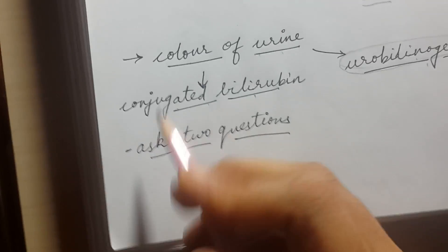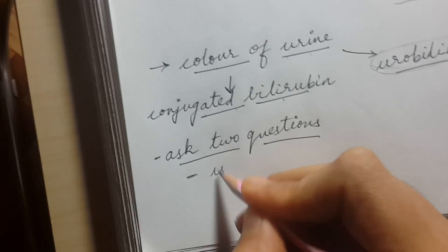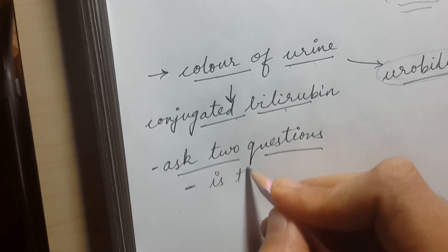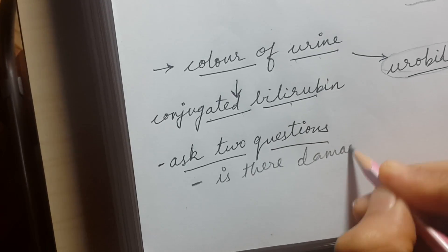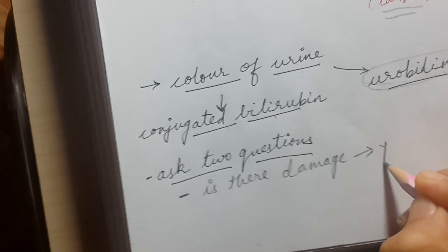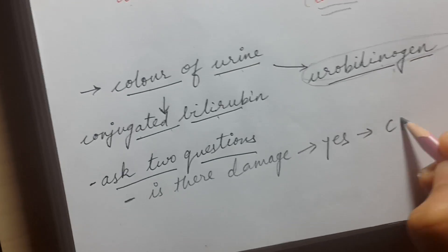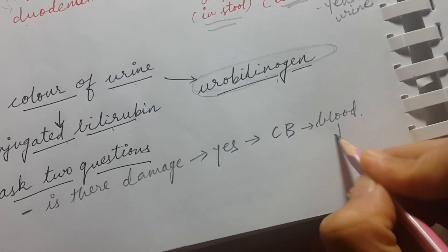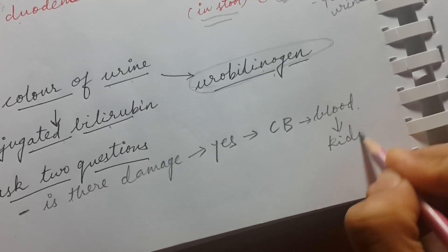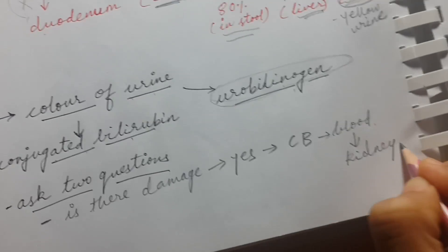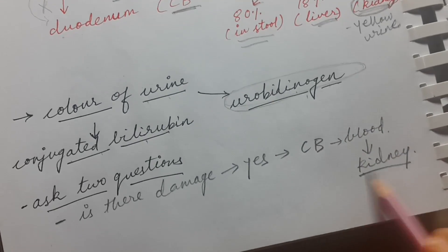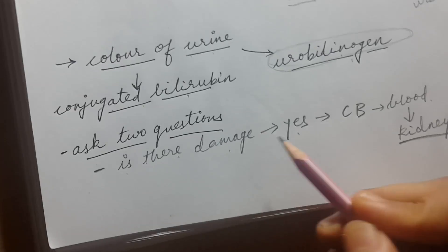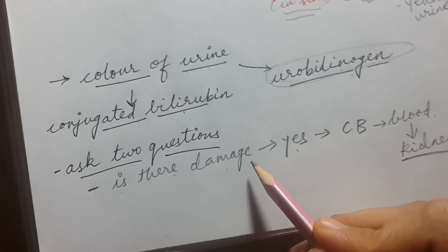To determine the cause of dark urine in each type of jaundice, ask two questions. First: is there any damage to bile canaliculi or bile duct? If yes, conjugated bilirubin from the bile duct enters the blood, reaches the kidney, and gives dark color to the urine. The two causes with bile duct damage are hepatitis and obstruction.